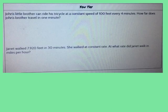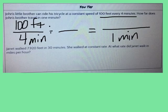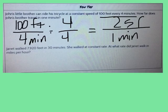Here's the first question you're going to try on your own. John's little brother can ride his tricycle at a constant speed of 100 feet for every four minutes. How far does John's brother travel in one minute? Go ahead and answer the question on your own, and we'll go over the answer in a moment. In order to answer this question, we need to go from four minutes to one minute. So how can I go from four minutes to one minute? Well, I know that I can divide by four. And in order to keep my ratio equivalent, I'm going to divide by four on the top and the bottom. Four minutes divided by four is one minute, and 100 feet divided by four is 25 feet. Therefore, the distance per minute is 25 feet per minute.